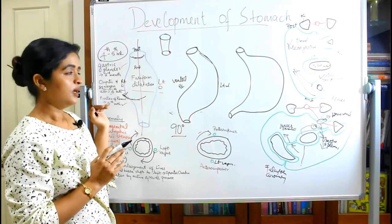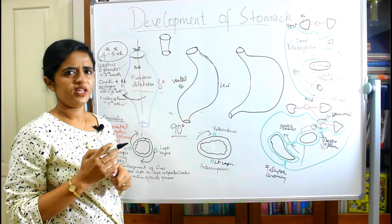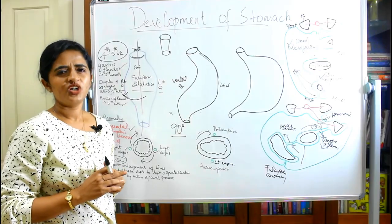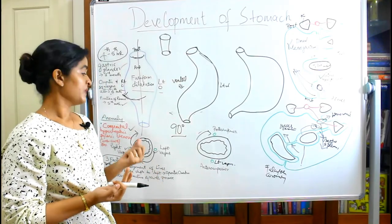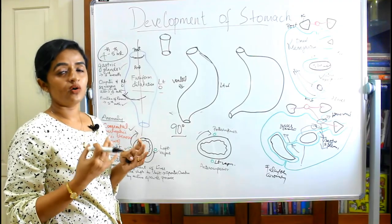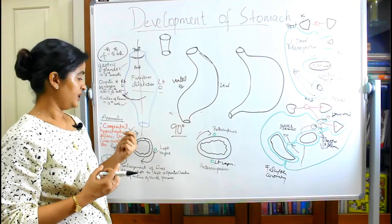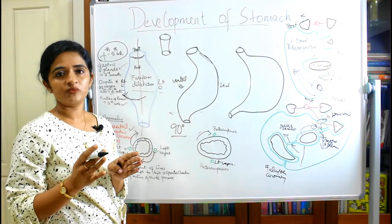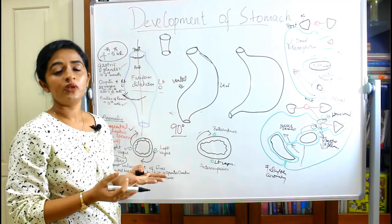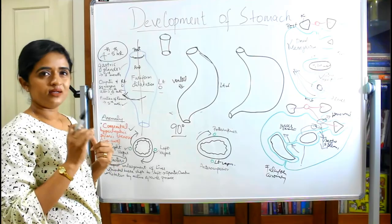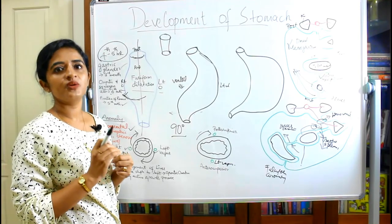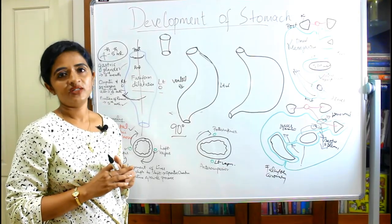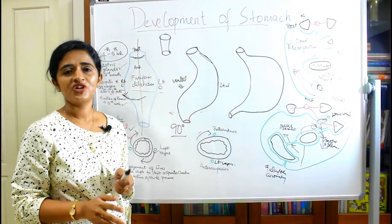An important anomaly affecting the stomach is congenital hypertrophic pyloric stenosis — hypertrophy of the circular muscles at the pyloric end of the stomach. It usually presents between two weeks to two months after birth. The child presents with progressive vomiting as the classical symptom, and boys are more commonly affected than girls.